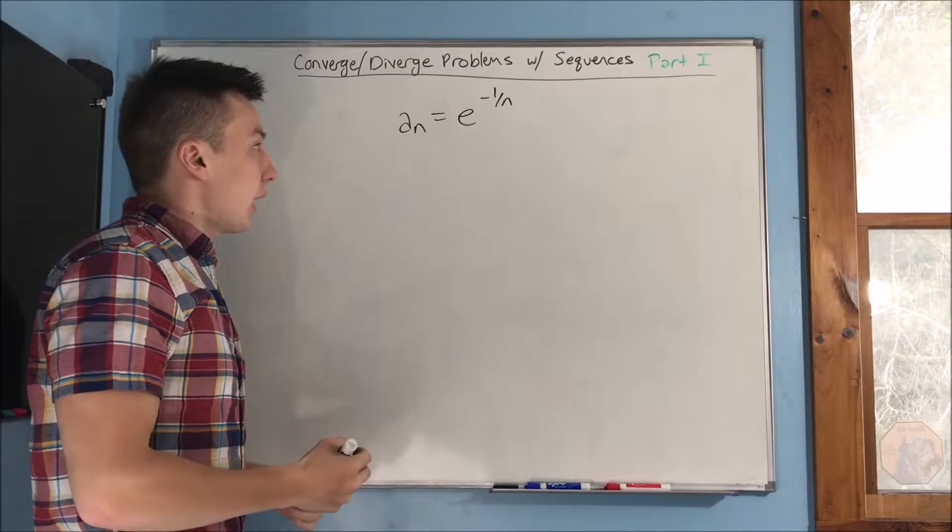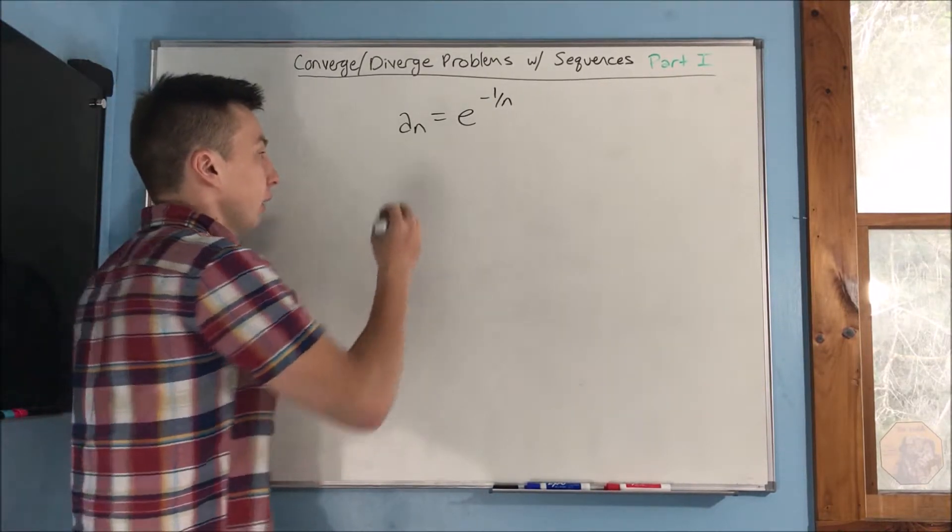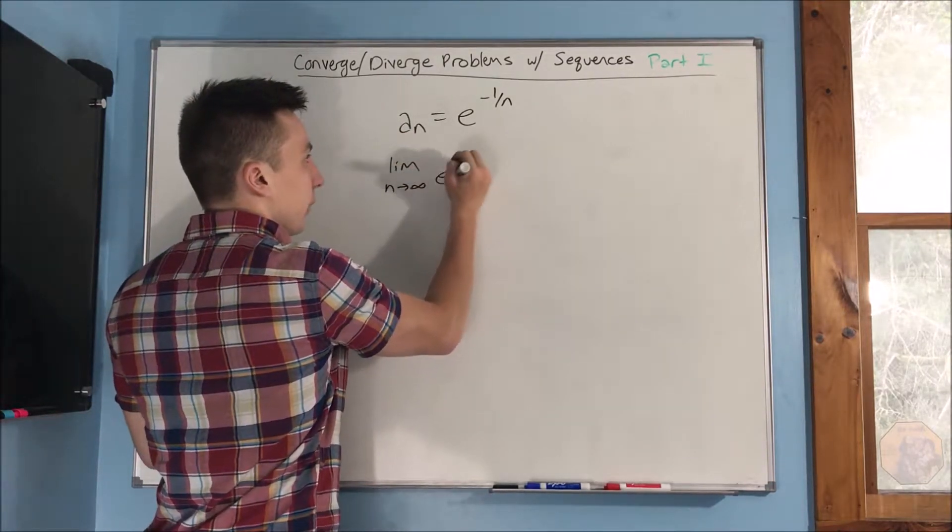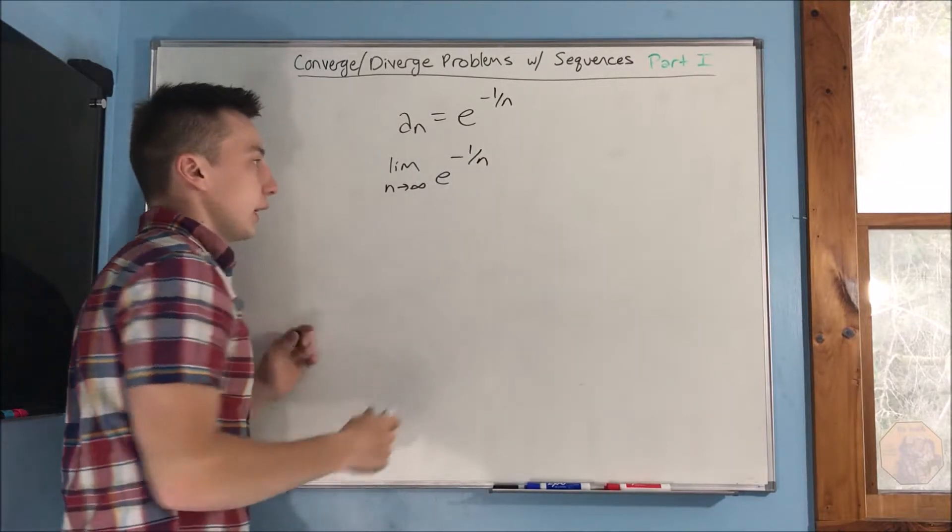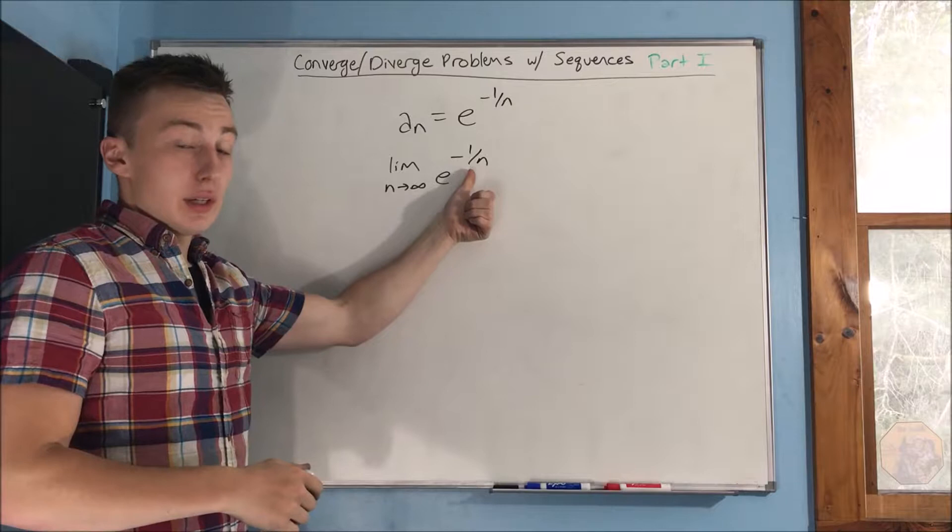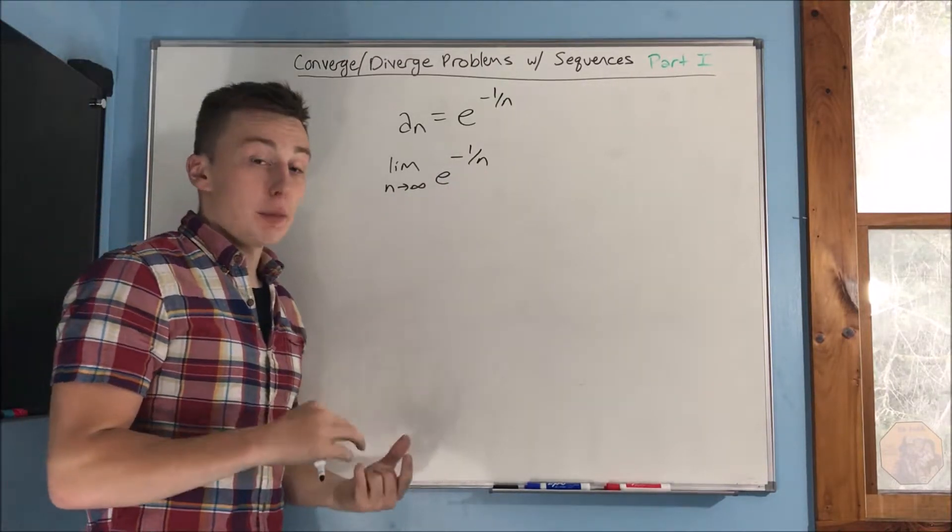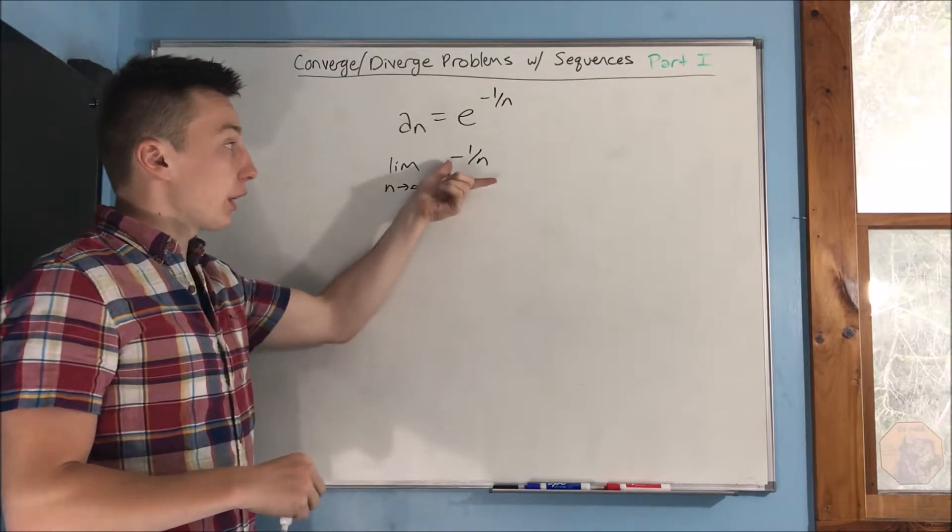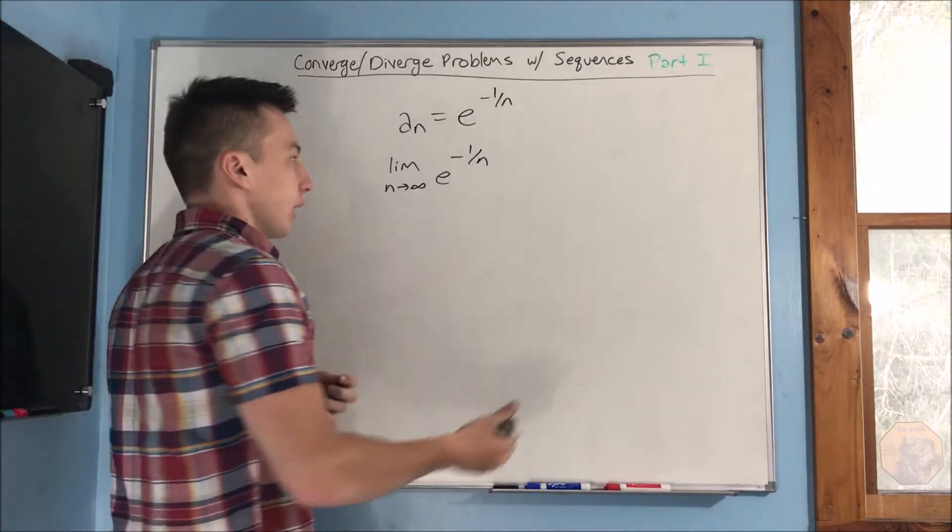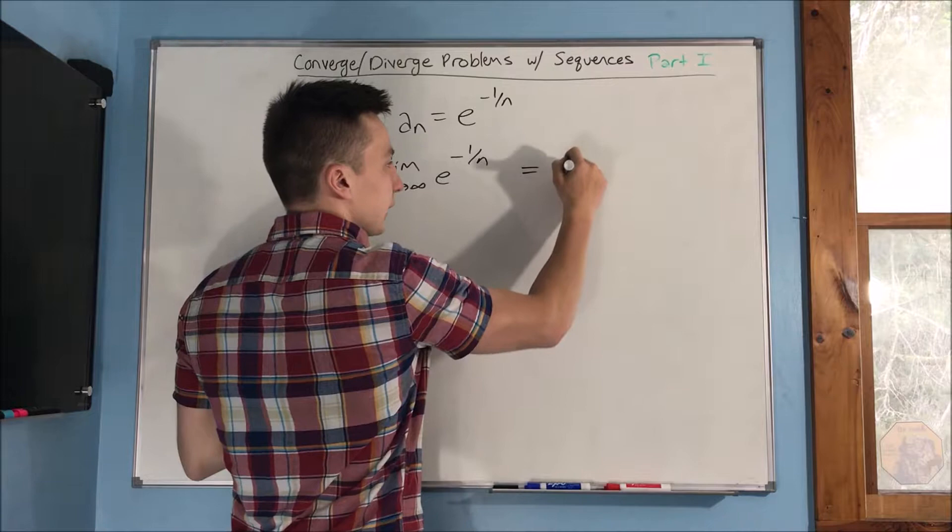Last one here, you have a sub n equals e to the negative 1 over n. If we're trying to take a limit here, if we take a limit as n approaches infinity, then we have e to the negative 1 over n of course in here. Well, as n approaches infinity, this fraction is just going to have a larger and larger denominator, which means overall it's going to get smaller. So you're going to basically have, you've got to think of this as e to the 0, which is just going to be 1. Anything to the 0 power is 1. So this limit ends up just equaling 1.